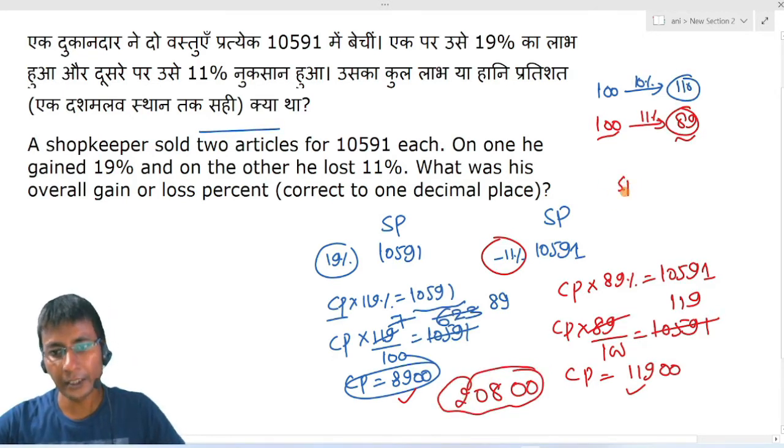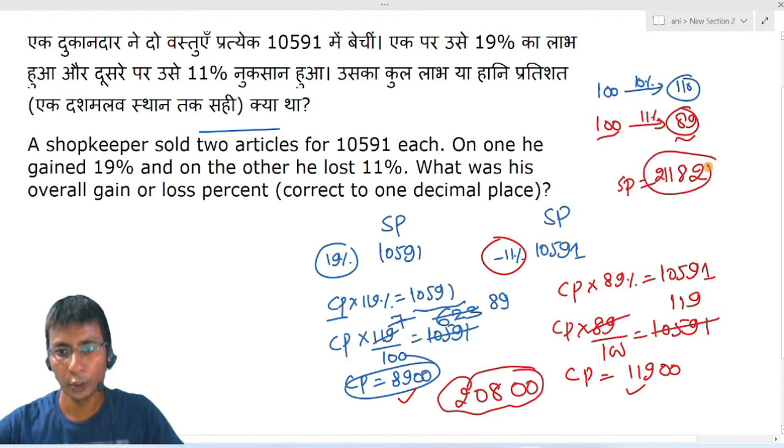Total SP will be - simply multiply by 2. So this is 2, this is 18, this is 1, 1 and this is 2: 21182.